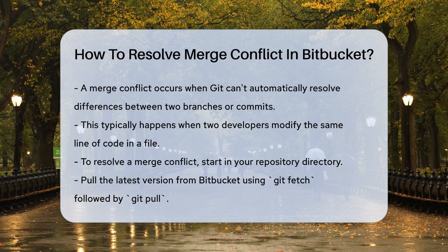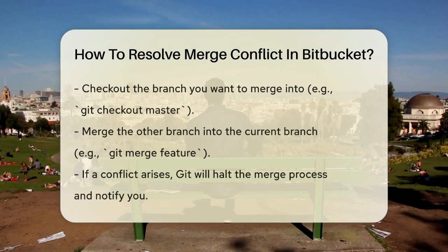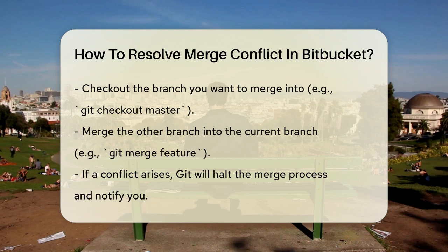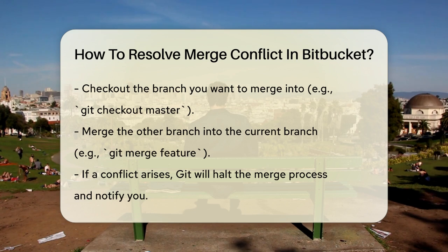Start by ensuring you're in your repository directory. Pull the most recent version of the repository from Bitbucket to make sure you have all the latest changes. This can be done using git fetch and then git pull to update your local repository. Next, check out the branch that you want to merge into and then merge the other branch into it.